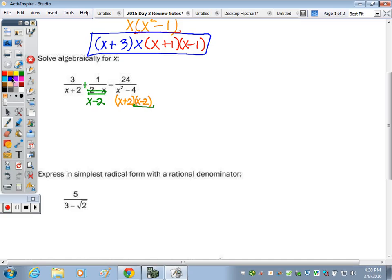So now I have the x minus 2, and I also need the x plus 2, so I'm going to multiply this by x plus 2, and whatever you do to the denominator, you must do to the numerator, and this one times x minus 2, so that they all have a common denominator.